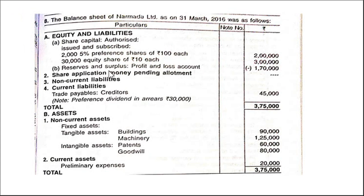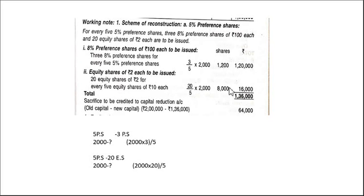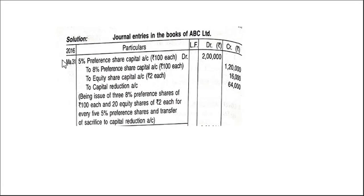According to the balance sheet, the old preference share capital is ₹2,00,000. We are settling it at ₹1,36,000. So old capital minus new capital = ₹2,00,000 − ₹1,36,000 = ₹64,000 savings. This ₹64,000 will be transferred to the capital reduction account. The journal entry is: Debit 5% Preference Share Capital (old) ₹2,00,000; Credit 8% Preference Share Capital (new) ₹1,20,000; Credit Equity Share Capital ₹16,000; Credit Capital Reduction Account ₹64,000.